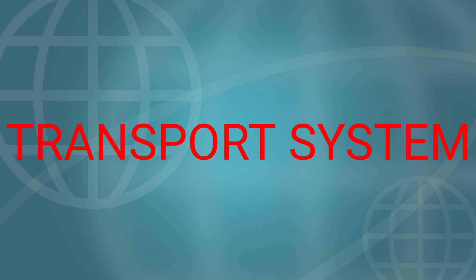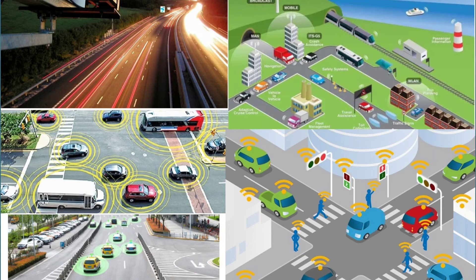Next is the transport system. The geographical location and a comfortable transport system play an important role in the distribution of population. People always get attracted to places that have better transport systems. That is why areas in river plains and coastal plains have well-developed transport systems and attract human habitation. It is because of this that population is highly concentrated in India's coastal and Gangetic plains.